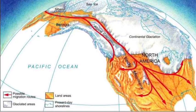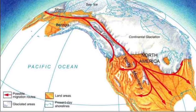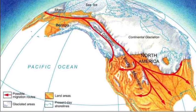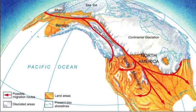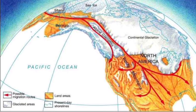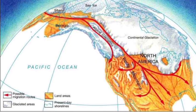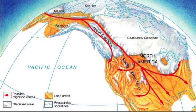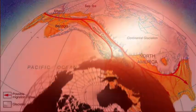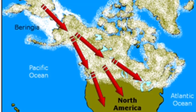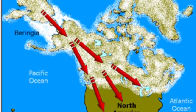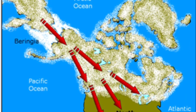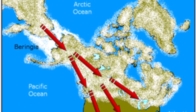Thousands of years ago, the Earth entered a time known as the Ice Age. During this time, low temperatures caused the water to freeze and the water levels in the ocean to drop. Because of this, land that is normally under the water could be seen and even walked on. During this time of frozen water and exposed land, a bridge was made that connected Asia and North America.